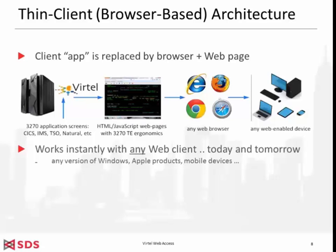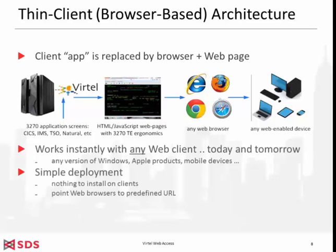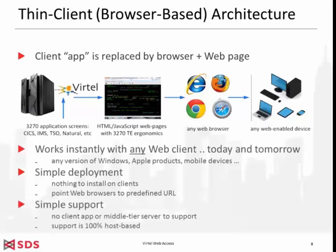Virtel Web Access works instantly with any web client — any version of Windows, any Apple product, any mobile device. From a deployment point of view, it's a very simple and instant deployment because there is nothing to install on clients. You simply point your web browser to the predefined URL and reach the Virtel logon menu. From a support point of view, it's also very simple because there is nothing to support outside the mainframe — no client app, no middle-tier server. Support is 100% host-based.